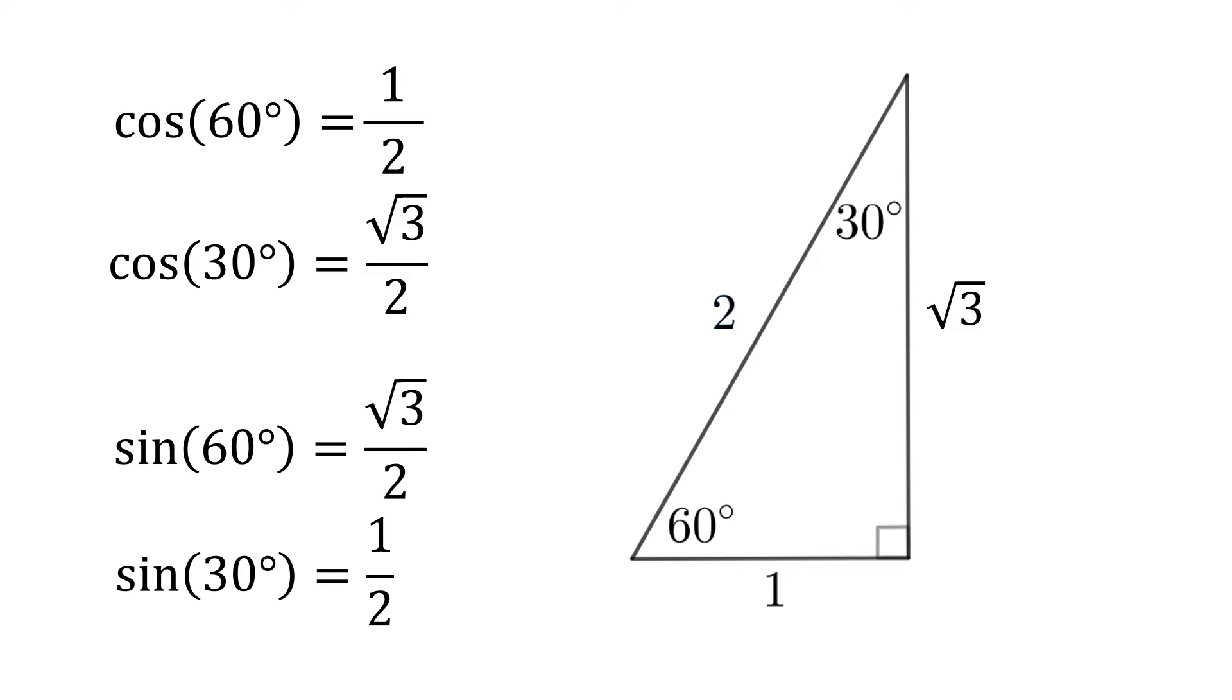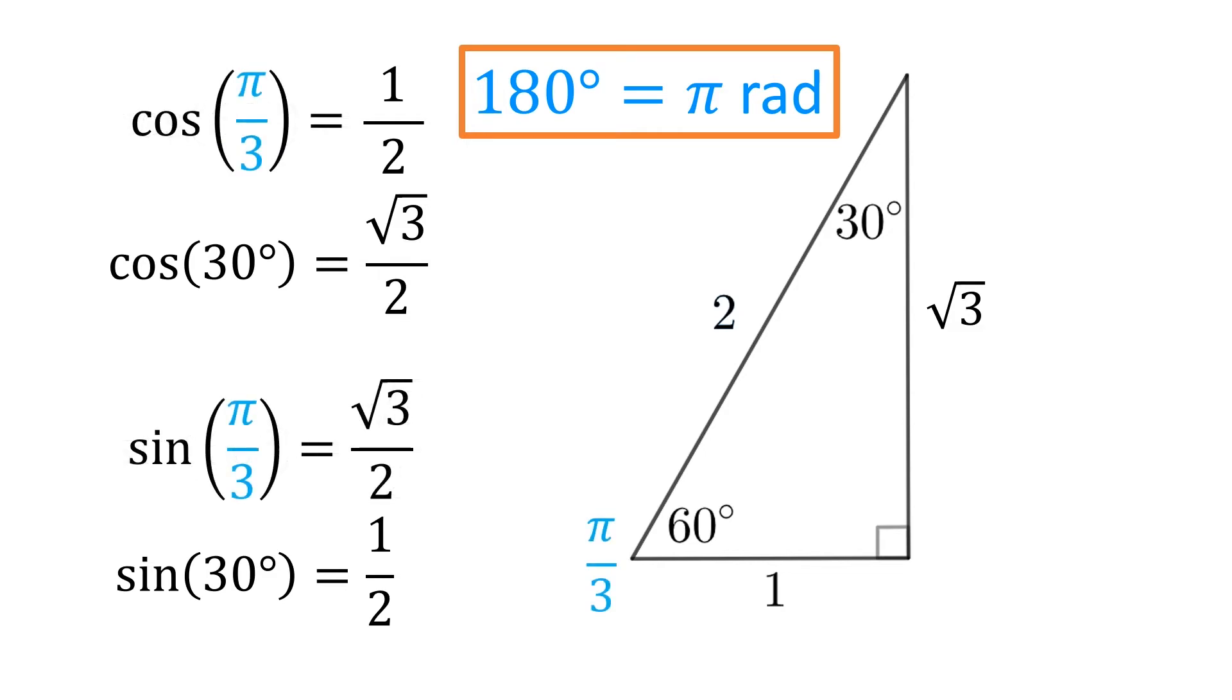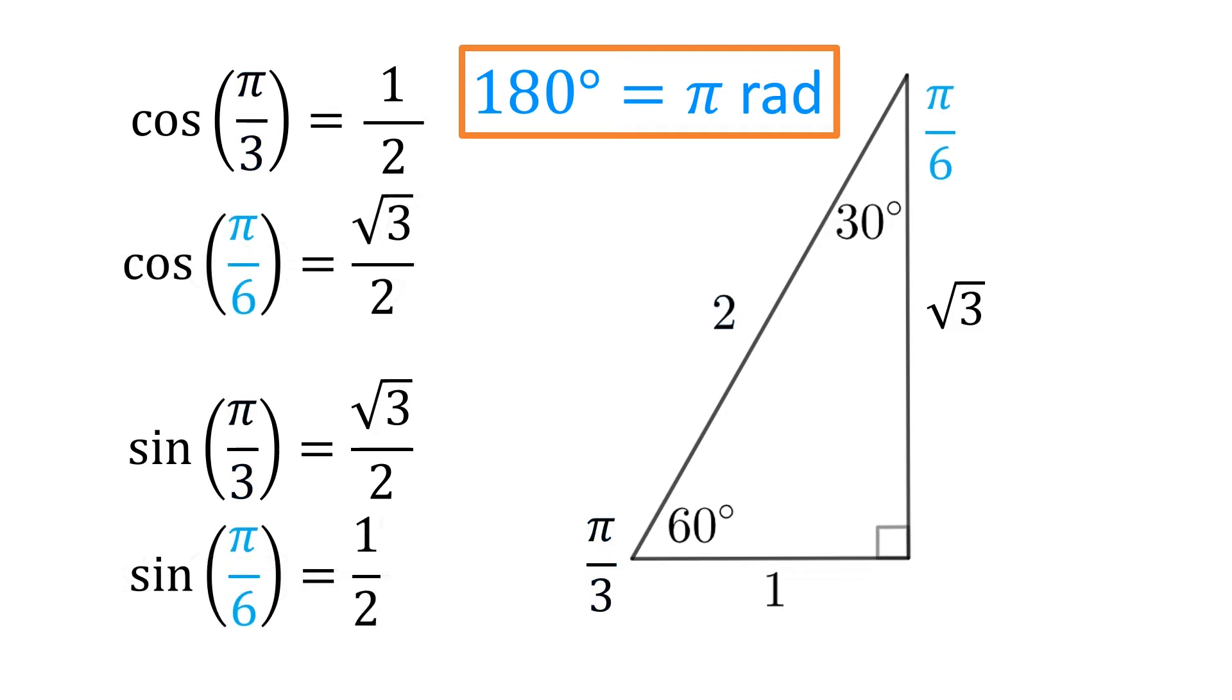For angles in radians, we just need to remember that pi radians is 180 degrees. 60 degrees is 180 over 3, so pi over 3. 30 degrees is 180 over 6, so pi over 6, and 45 degrees is pi over 4.